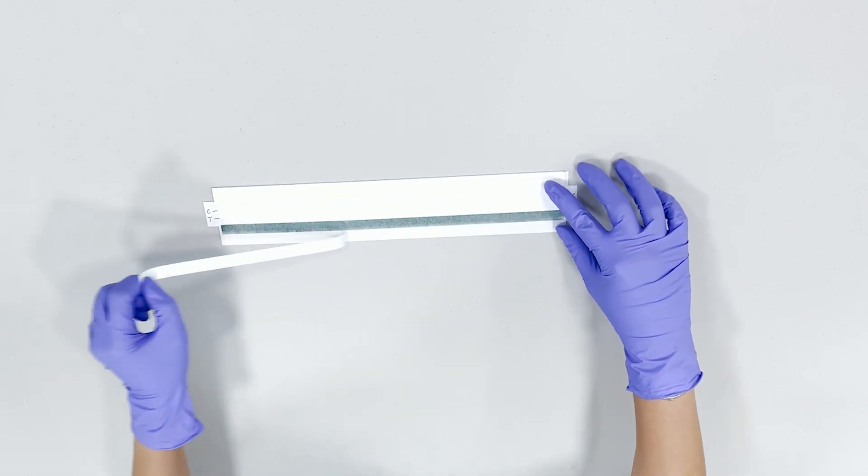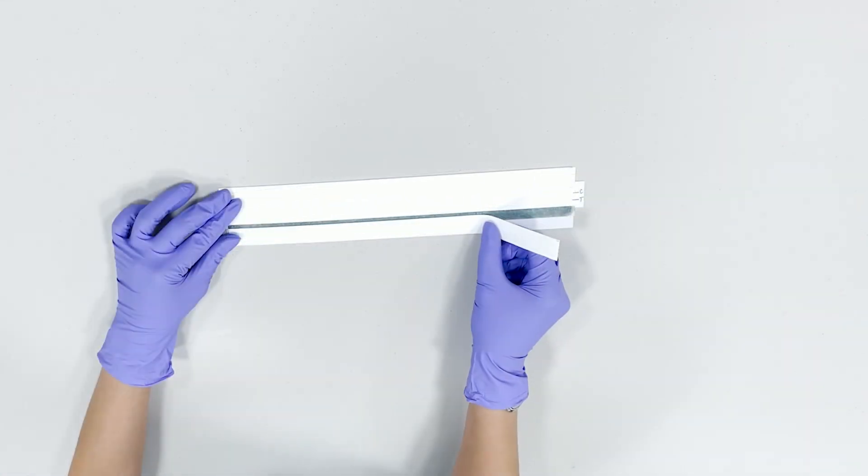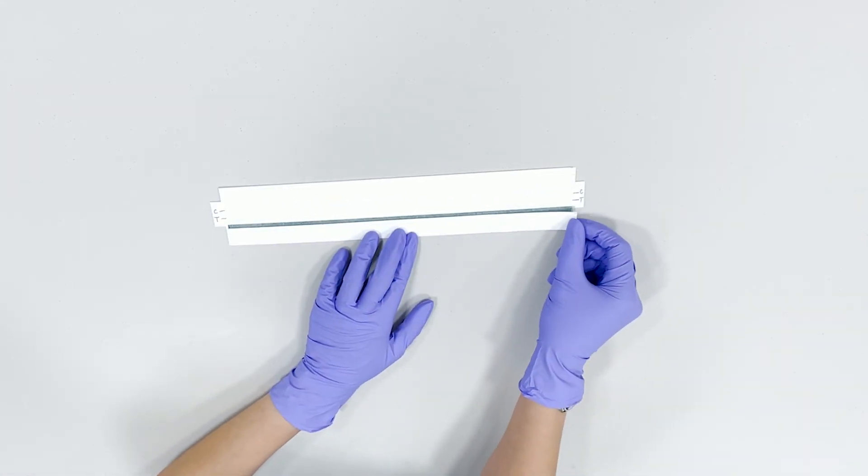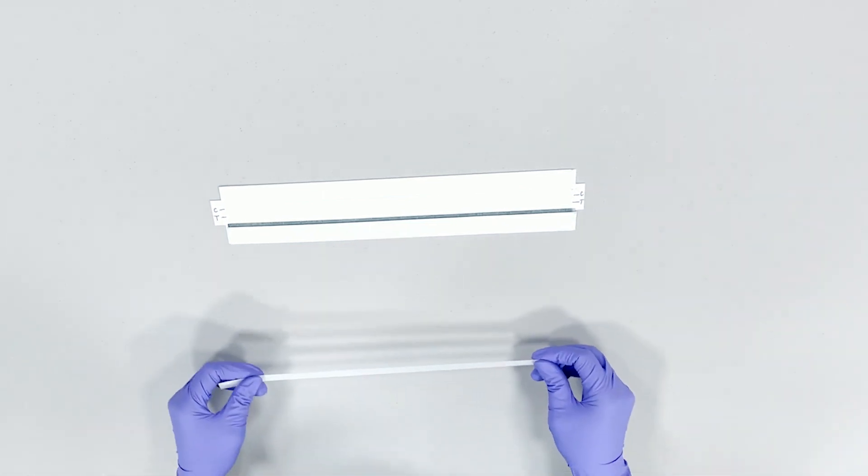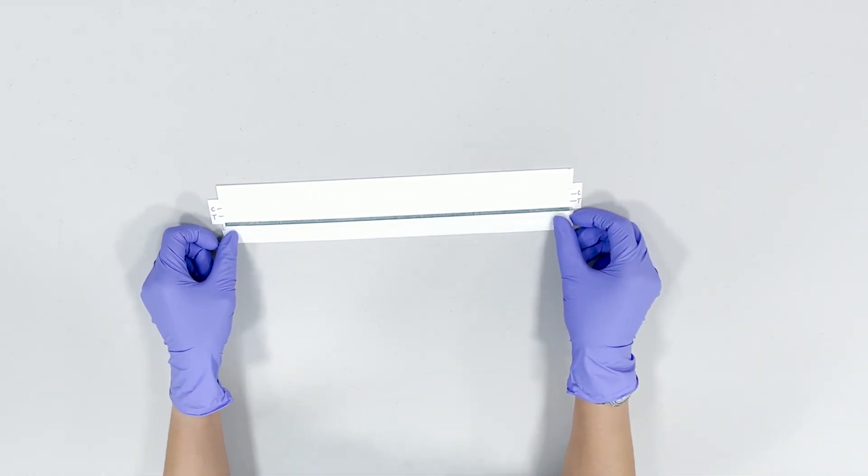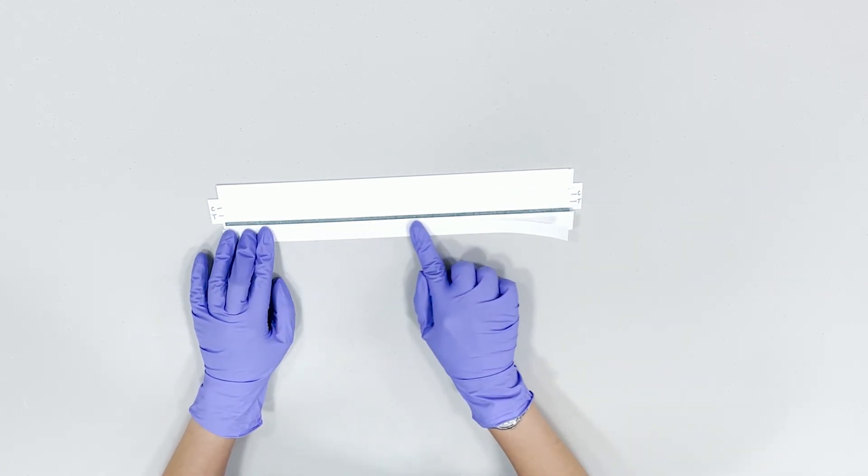Finally, peel off the sample pad liner and align the sample pad from the bottom edge of the card. Place the shiny side of the liner on top of the sample pad and run your finger lightly across the pad.